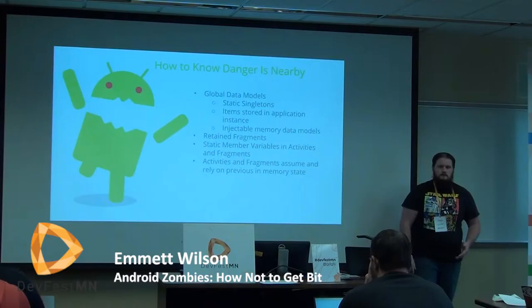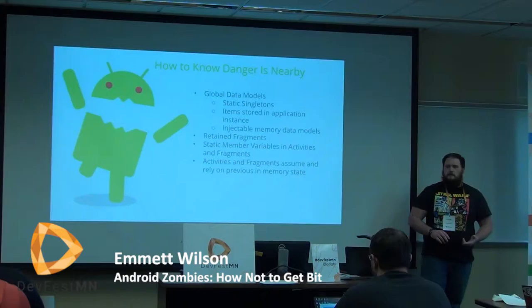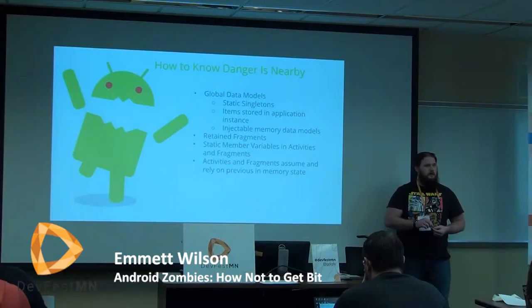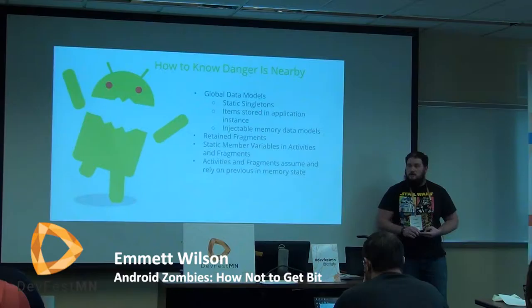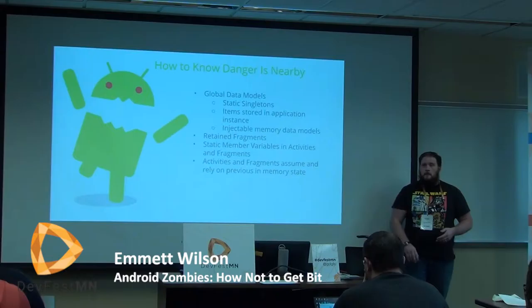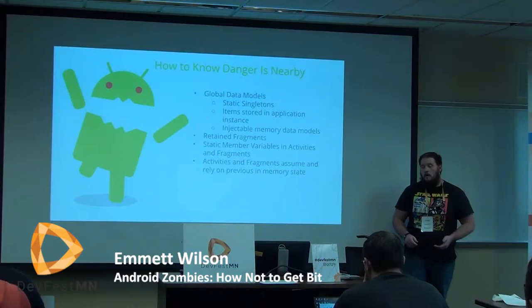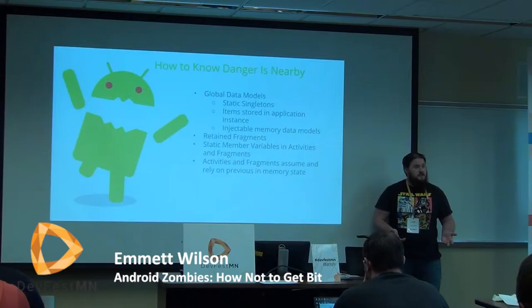Warning signs that danger is nearby: first is global data — your in-memory models. You'll see common patterns of people storing objects in their application class, in classes injected from their injection framework, or in static singletons to pass data between screens. That way when they're in the middle of a workflow, they can just reach over and grab it out of memory. When the application is torn down, all of those classes are gone and recreated fresh.